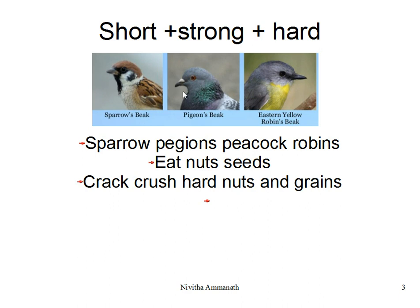Strong, short, and hard beaks are very short, very strong, and very hard. They are hard and strong because these birds eat nuts and seeds. Sparrows, pigeons, peacocks, and robins have short, strong, and hard beaks because they eat nuts and seeds. This strong beak helps to crack and crush the hard nuts and grains.